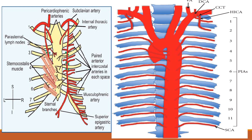That is why the first two ribs are spared in post-ductal coarctation of the aorta, while rib notching is seen from the third to the ninth intercostal space only. The 10th and 11th are again from the low-pressure system, so no notching is seen there either. Only ribs 3 to 9 show rib notching in coarctation of the aorta.